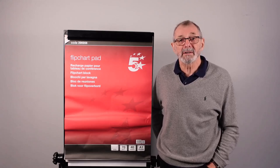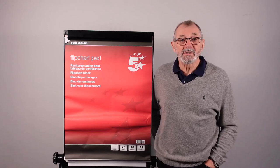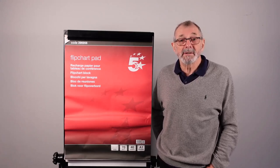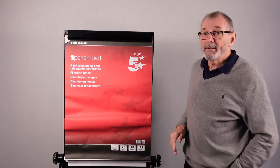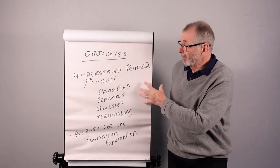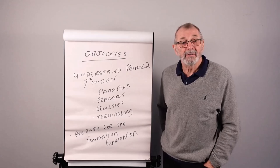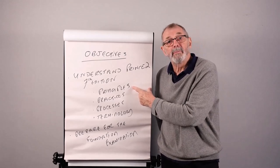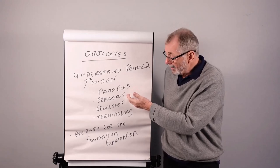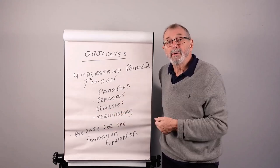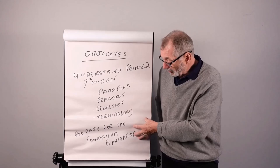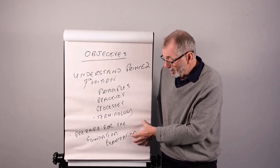So this course is PRINCE2 version 7 Foundation. The version 7 edition of the manual was released in September 2023. The objectives of the course are essentially here: the idea is through the foundation course you should understand that 7th edition. When I say understand it, I mean the principles upon which all projects are based, the practices - the aspects of project management which we cover, the processes - the step-by-step activities which guide people through the project, and the terminology used. We also want to prepare you for the PRINCE2 Foundation examination.